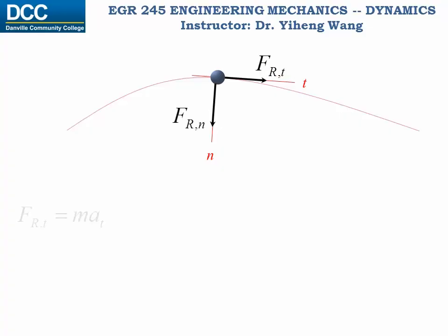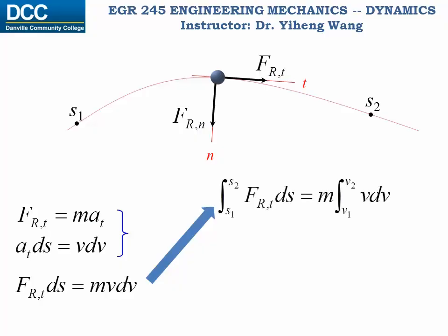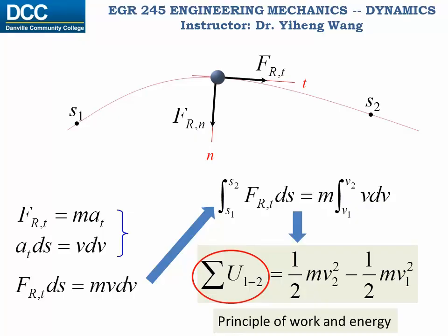According to Newton's second law, the resultant force along the tangential direction equals m, the mass of the particle, times a_t, which is the acceleration along the tangential direction. We also know the kinematic equation a_t ds equals v dv. Combining these two equations and integrating from position one to position two gives us an equation where the left-hand side is simply the total work done to this particle during this process. This is known as the principle of work and energy.